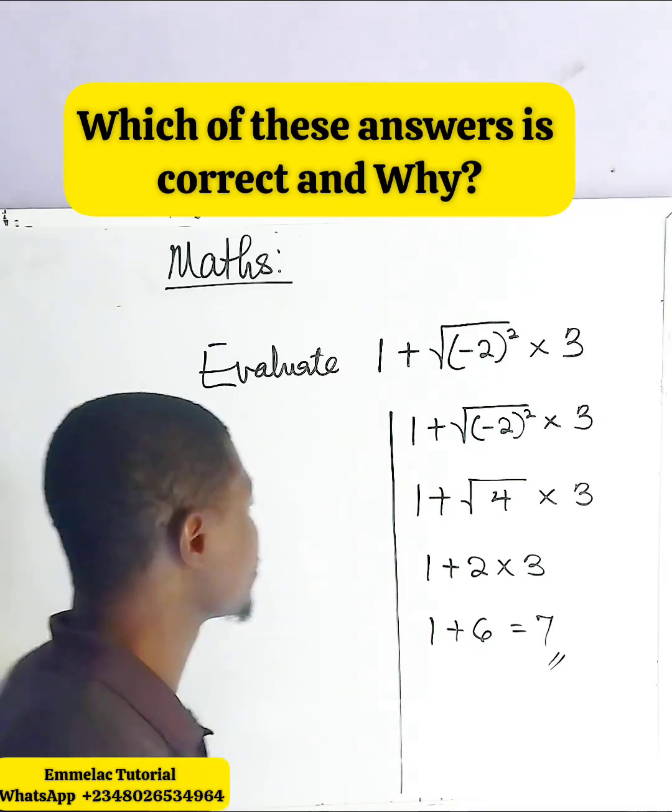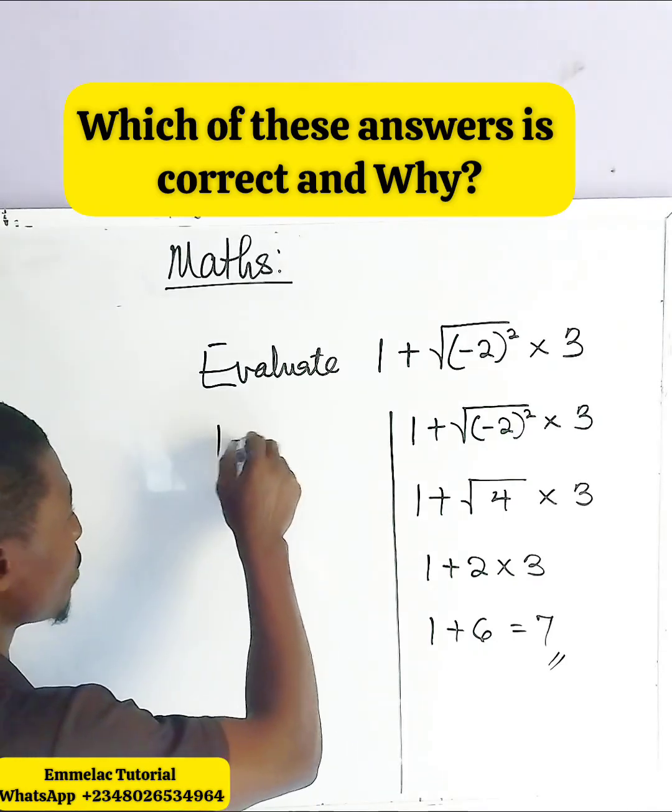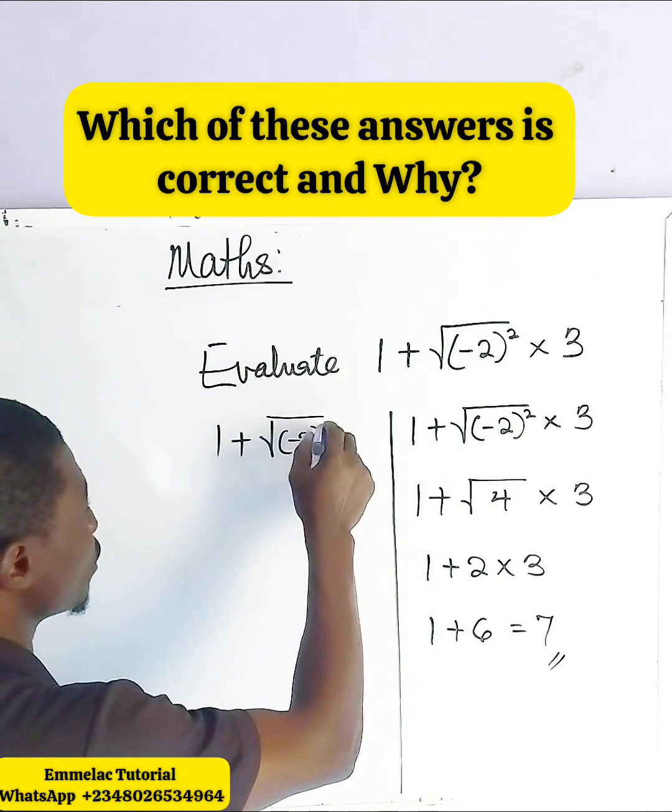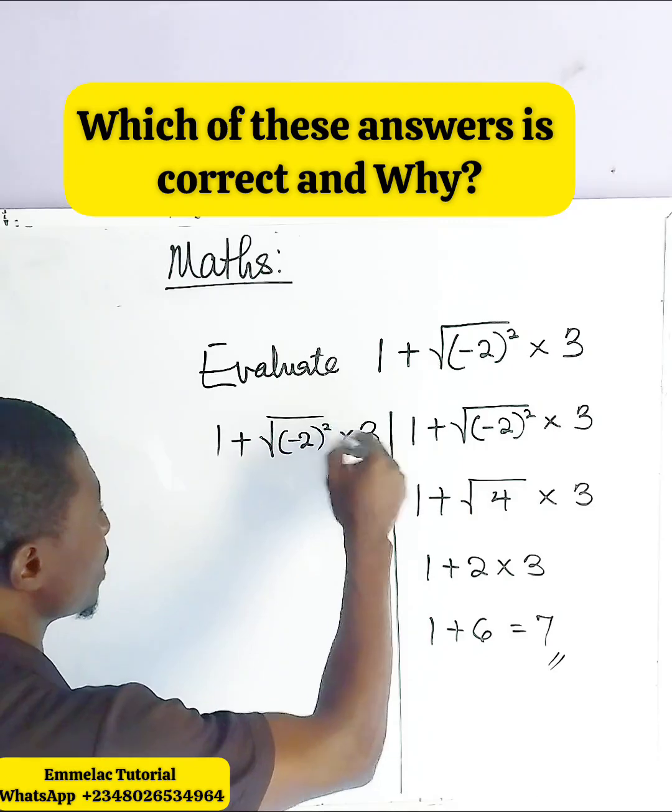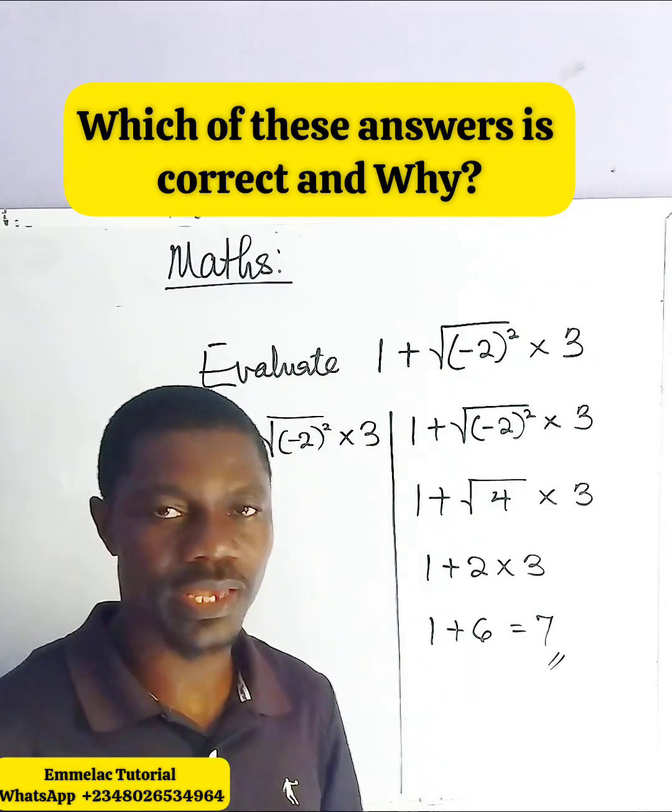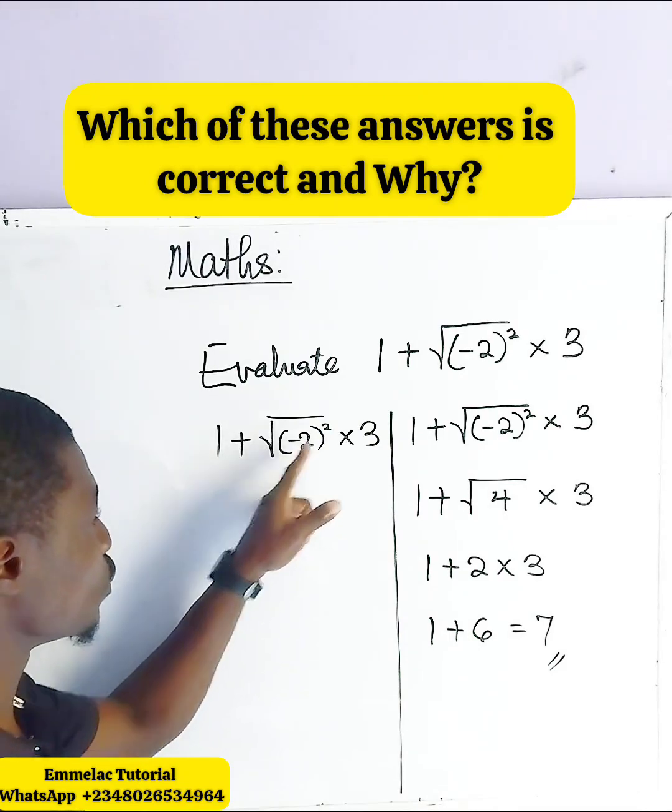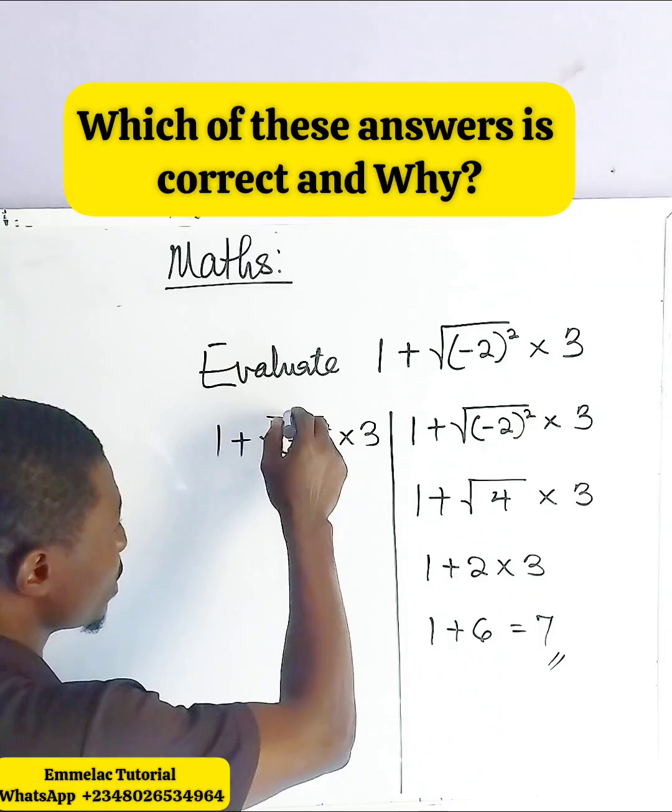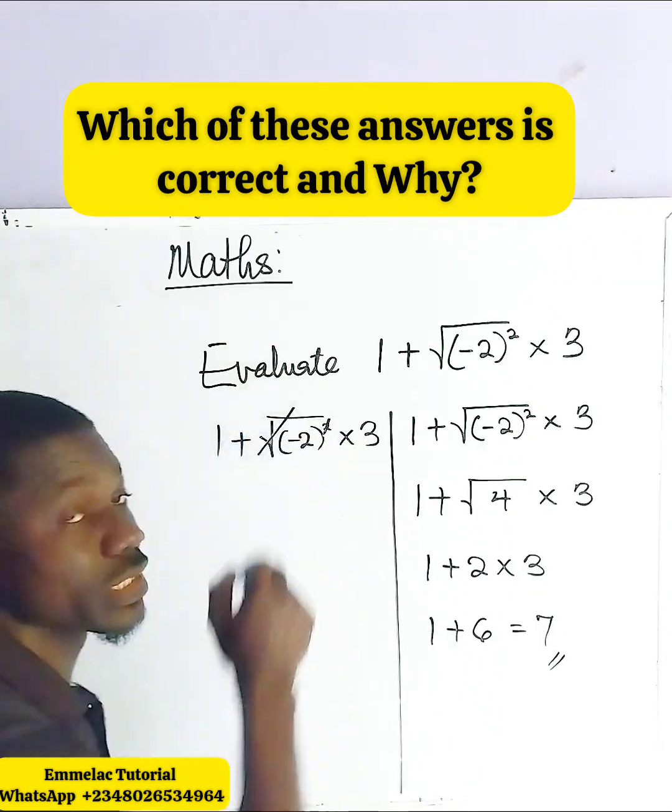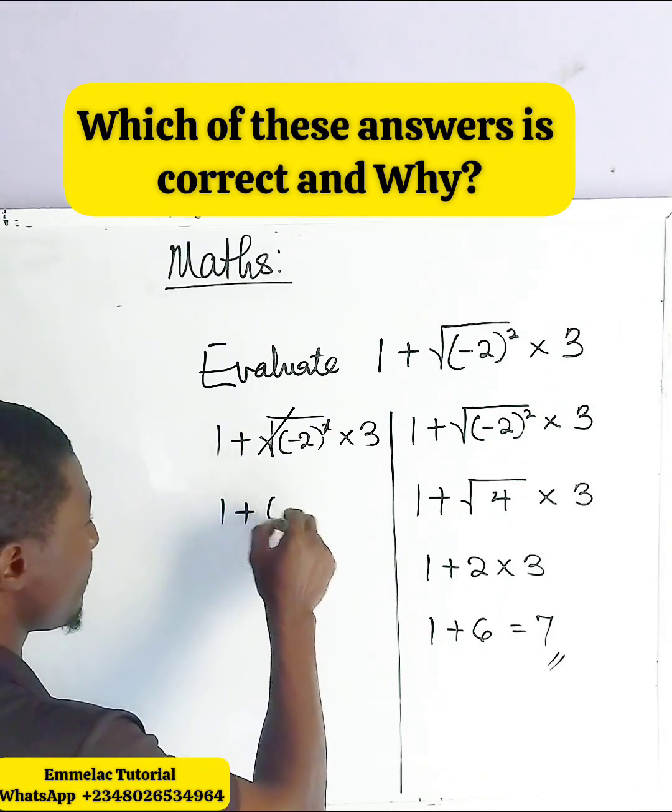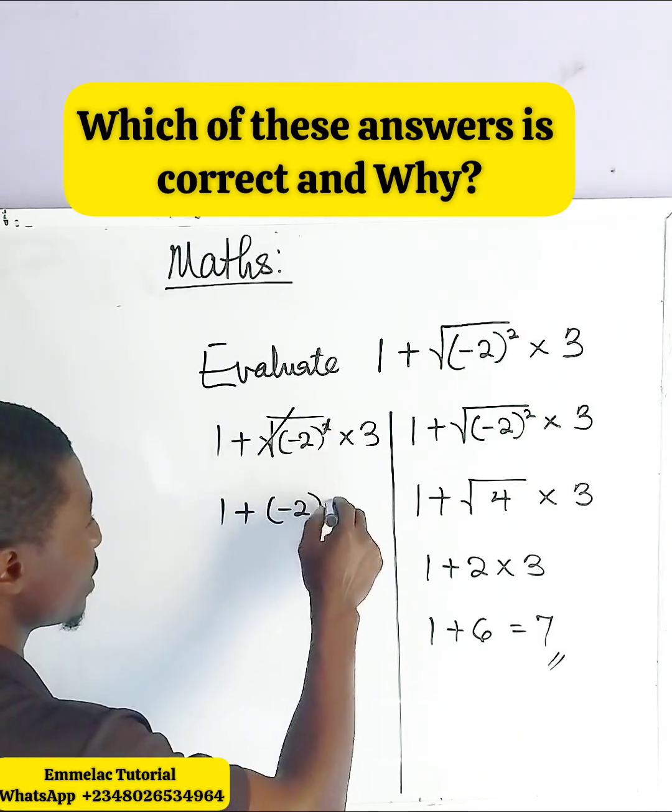Now the next approach here is 1 plus the square root of negative 2, or the square root of (-2)² times 3. Now let us undo this. We can actually undo this, right? So we are left with 1 plus negative 2, then times 3.